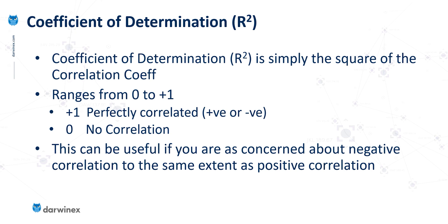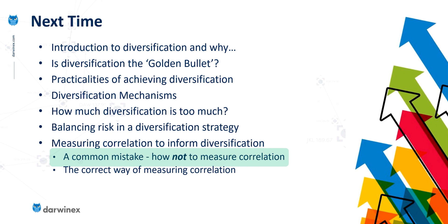If two of the assets in your portfolio were negatively correlated, but you were holding one of those long and one of them short, then you'd have exactly the same problem as two positively correlated assets held in the same direction — the risk is effectively the same. So now that we have that grounding in the techniques we're going to use, next time we're going to start putting them to use. I'm going to start off by looking at one of the most common mistakes that traders make when measuring correlation, to ensure that you don't go down that path. And then in the episode that follows, I'll show you the correct way.